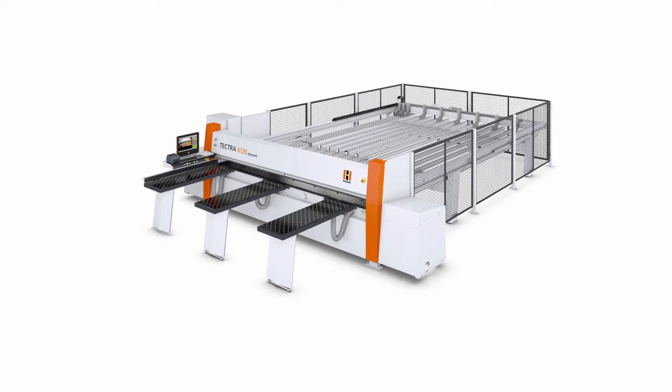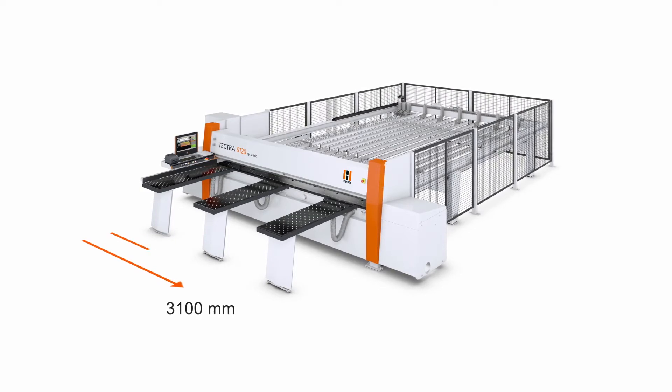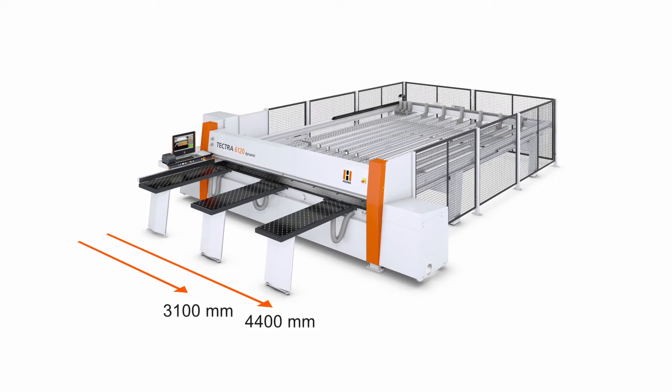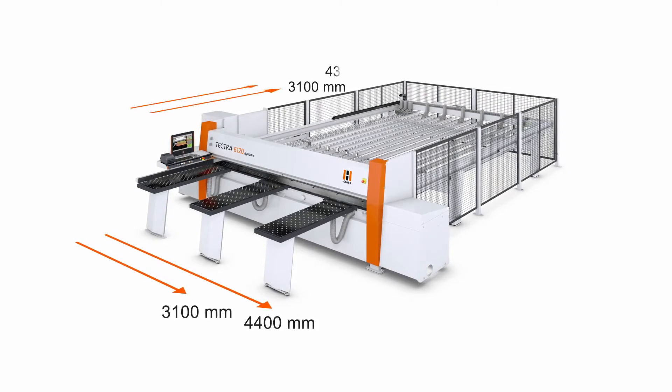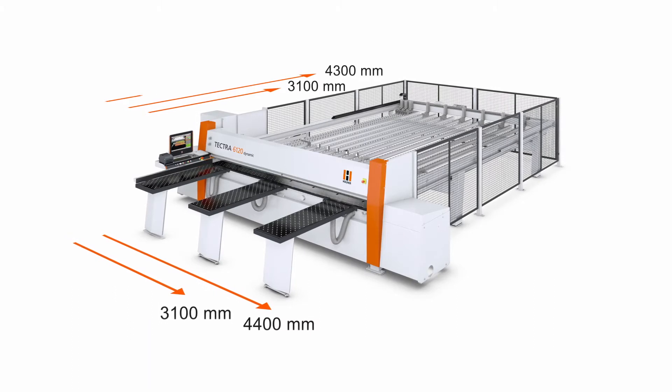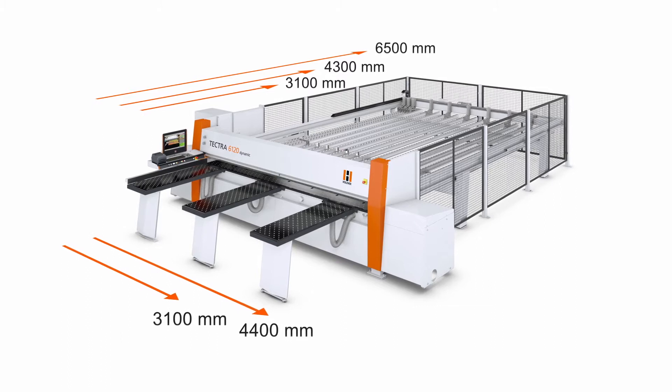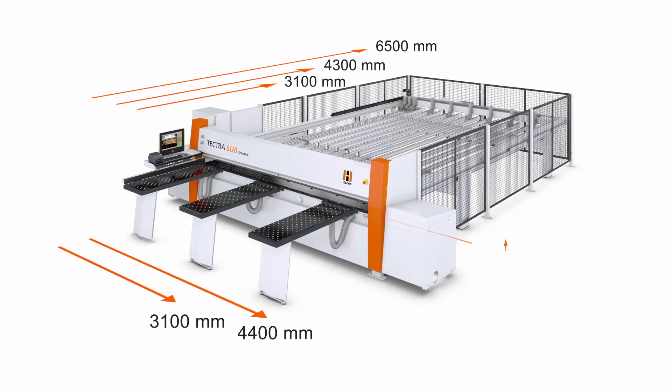You can select between two cutting lengths, 3100 and 4400 millimeters, as well as matching cutting widths of 3100, 4300 and 6500 millimeters. This means that the Tektra 6120 is ideally configured for all types of panel material and operative situations.